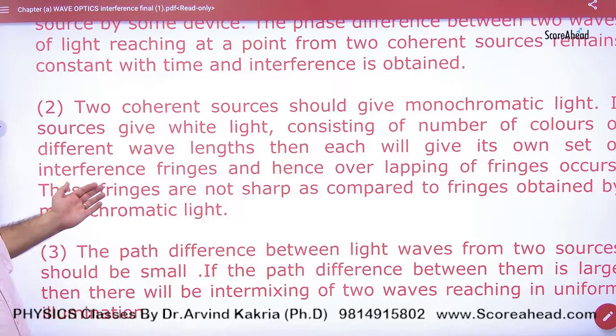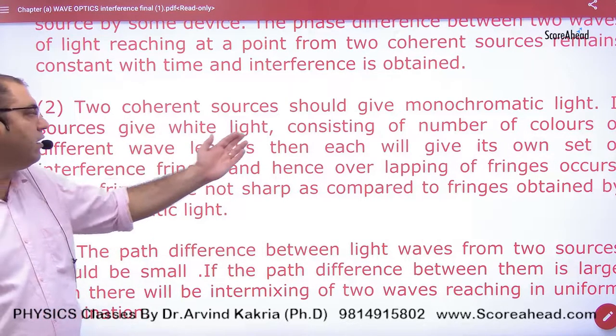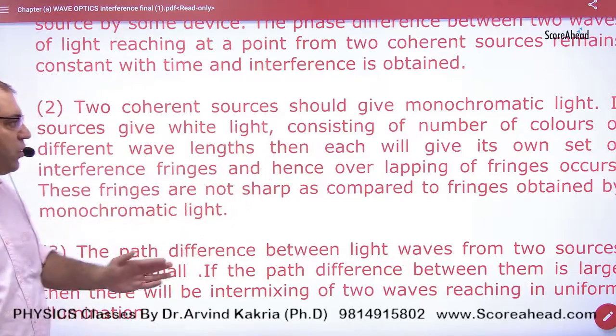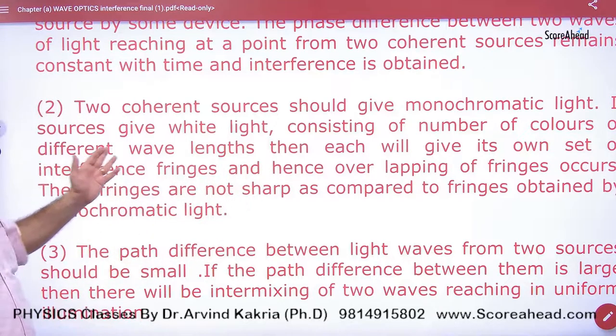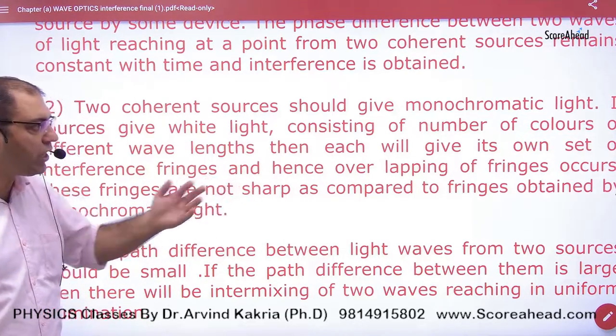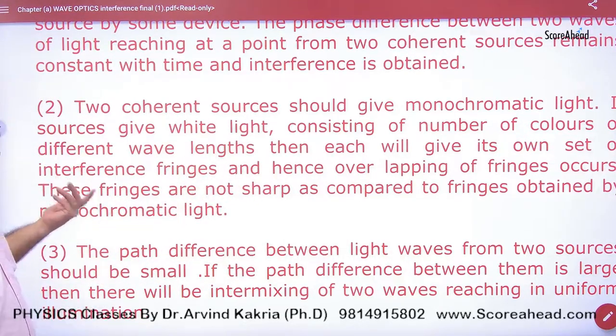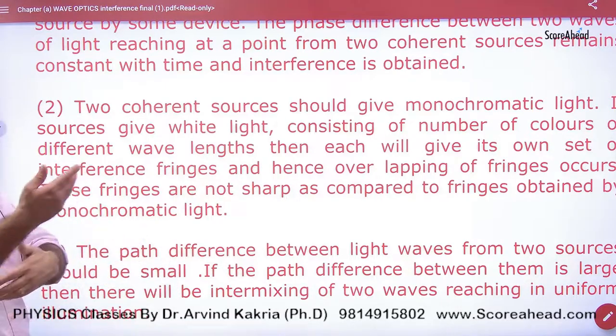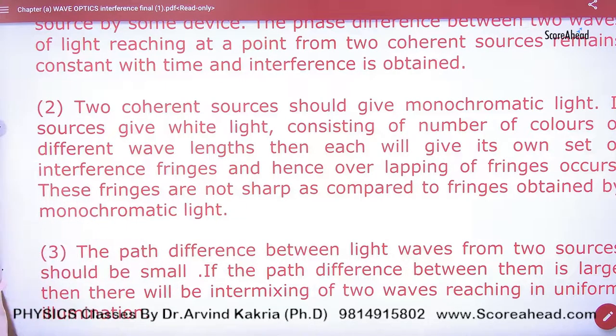When white light is used, consisting of a number of colors of different wavelengths, then each color will give its own set of interference patterns. So the result will be an overlapping pattern, and a clear interference pattern will not be visible.